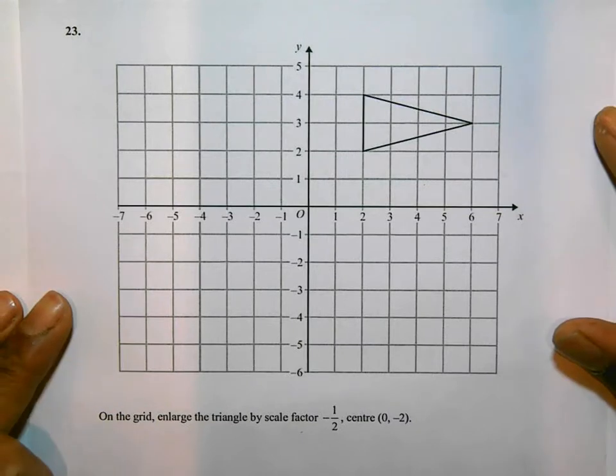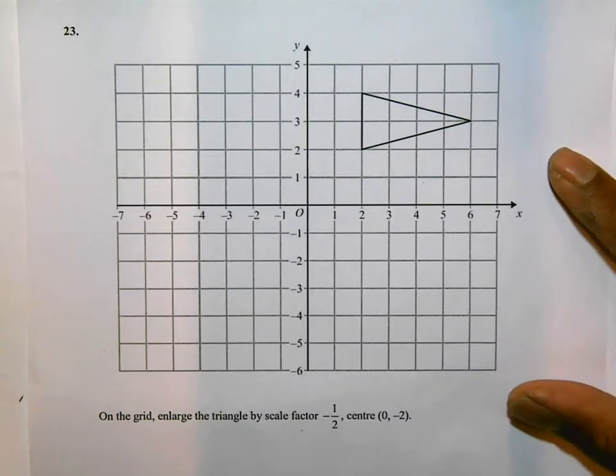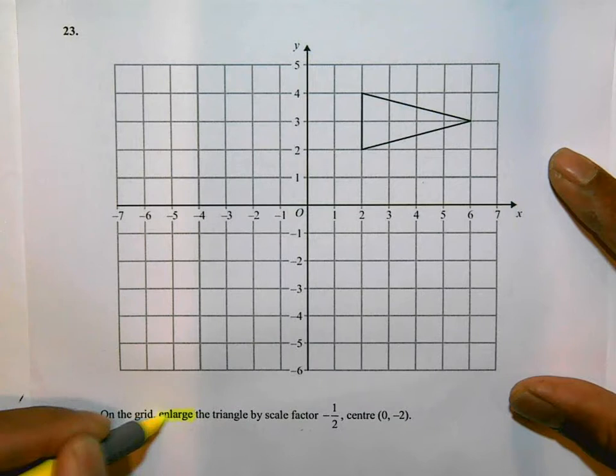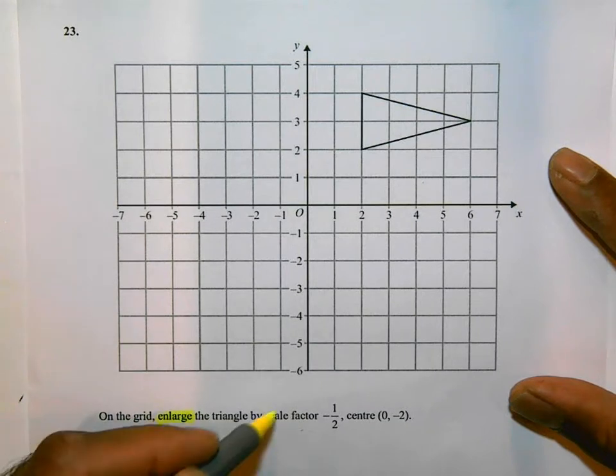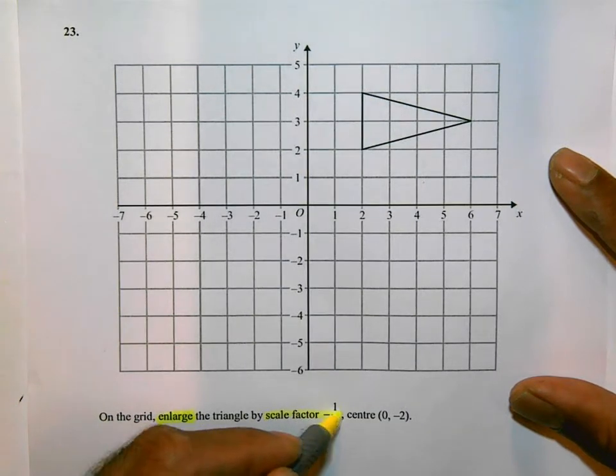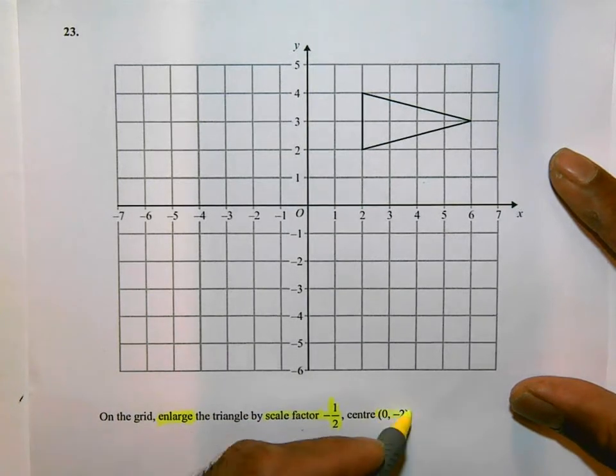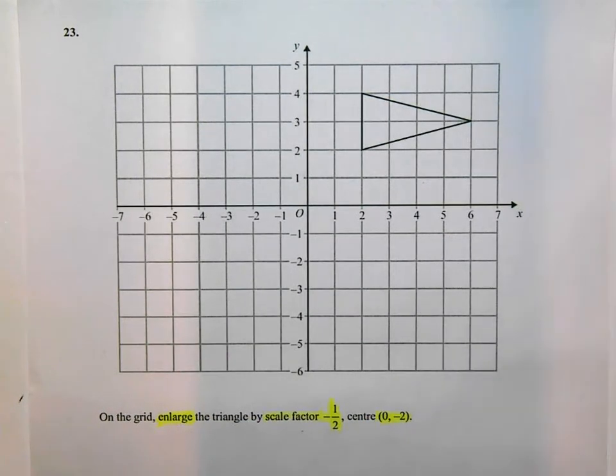So there's a lot of information here. The question is asking you to enlarge the shape, and you should know what you're about to do. You're going to enlarge it by a scale factor of minus a half, and the center of the enlargement is 0 minus 2.